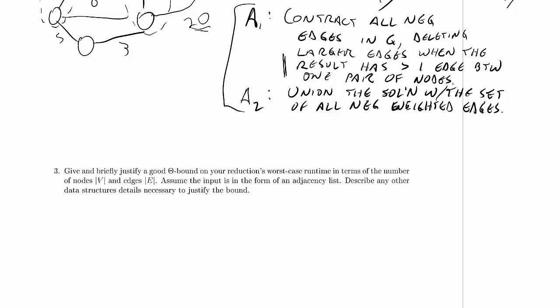Welcome to Computer Science 3.20, 2015 Winter 1's Midterm 1 Practice Problems. We're working on Problem 4, Part 3, and we've just finished Part 2, where we made a reduction from the minimum spanning subgraph problem with negative edge weights to the minimum spanning subgraph problem without negative edge weights. Now we're going to give and briefly justify a good theta bound on our reduction's worst-case runtime in terms of the number of nodes V and edges E, assuming the input is in the form of an adjacency list for both problems.